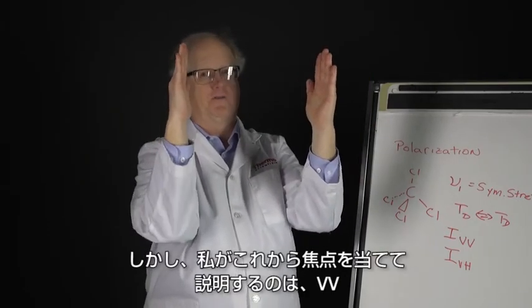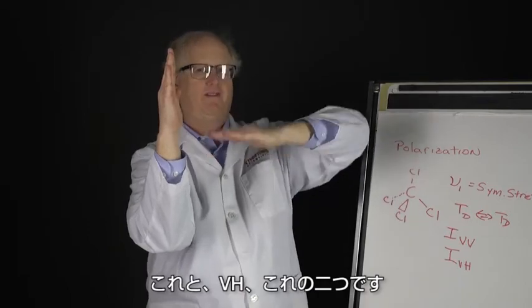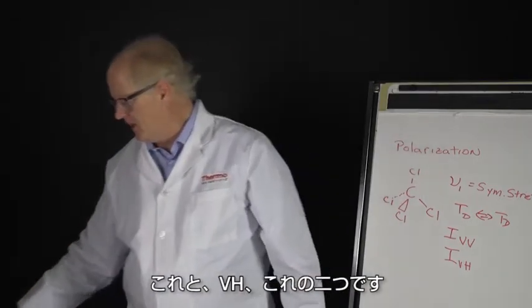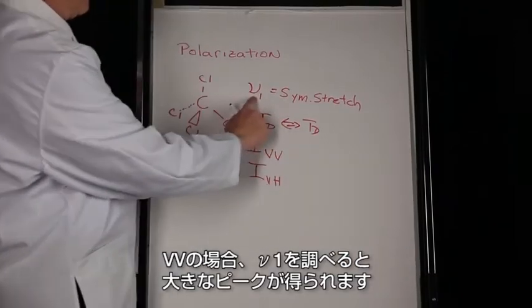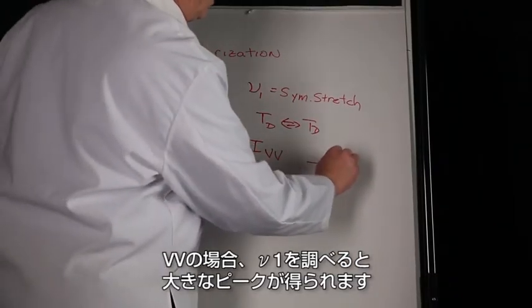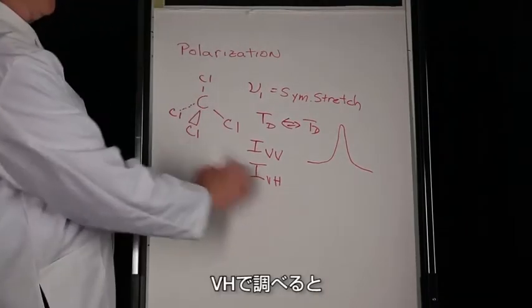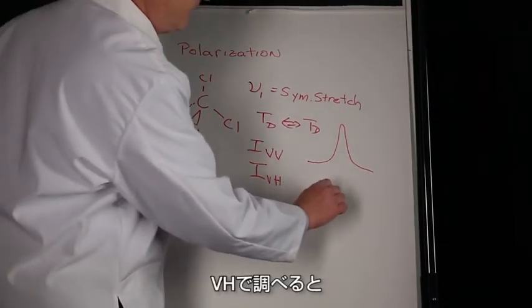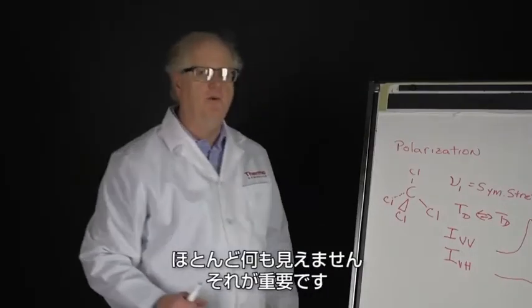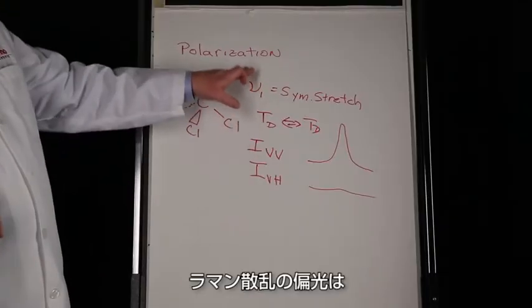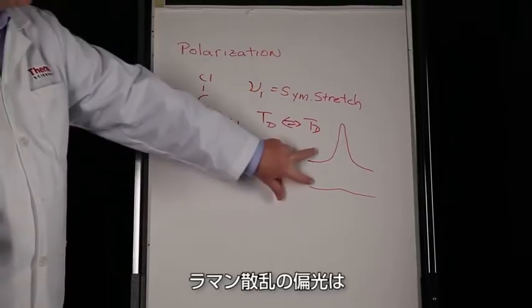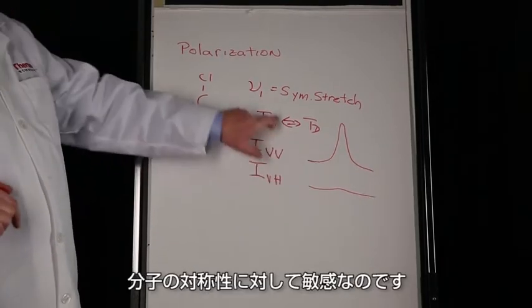Obviously there's four combinations—VV, HH, HV—all the four. But the two that I'm really going to be concentrating on are VV and VH. In the case of VV, if I look at the ν1, I get a large peak. If I look at the VH, I see almost nothing.